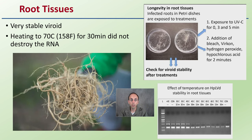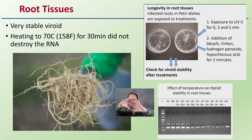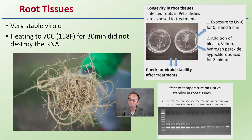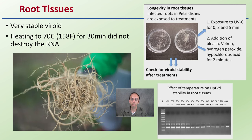Root tissue carries a very stable viroid. Heating it to 70 degrees Celsius — about 158 degrees Fahrenheit — for 30 minutes did not destroy the RNA. That RNA is looped over itself, making it very, very stable with great longevity in the roots. This speaks to why hop latent viroid has probably become so prevalent in the growing world — it's so stable that it transfers very easily, and once established, it's very hard to get rid of.